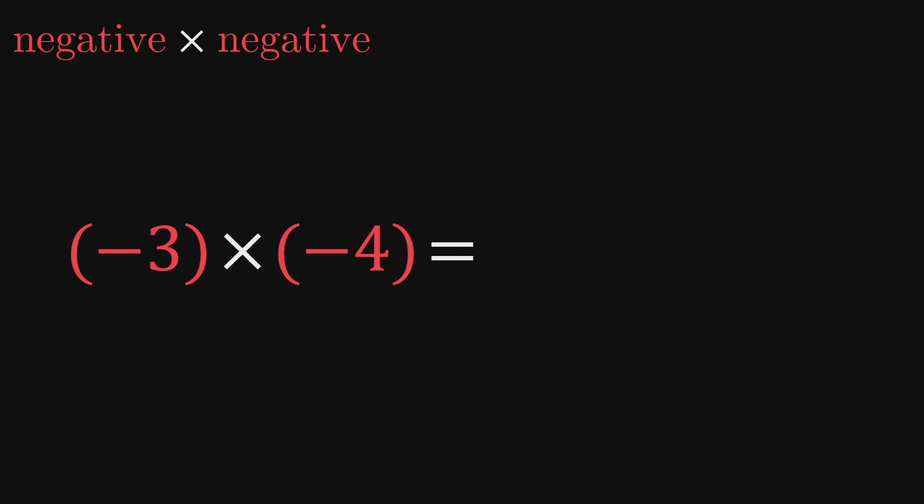Sometimes, negative 3 times negative 4 is viewed as the opposite of 3 groups of negative 4, or as removing 3 groups of negative 4. Although these interpretations might serve as ways to remember that two negatives multiply to a positive, they don't really get to the heart of why that is the case.